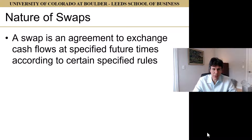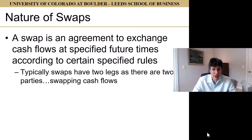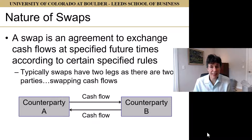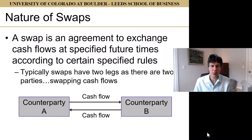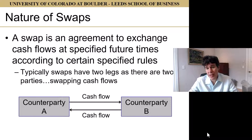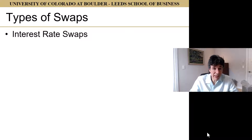A swap is simply an agreement to exchange cash flows at specified future times according to certain rules. Typically swaps have two legs, as there are two parties swapping cash flows. Counterparty A agrees to pay counterparty B a set of cash flows; counterparty B agrees to pay counterparty A a different set. If the cash flows are in the same currency, we net them and the net amount goes from A to B or B to A. If the currencies differ — like in that original example — Deutschmarks and Swiss francs flow one direction and dollars flow the other.